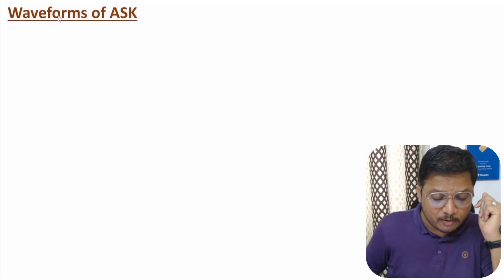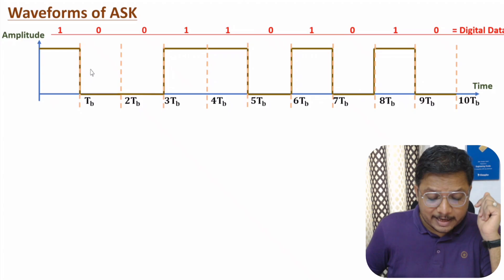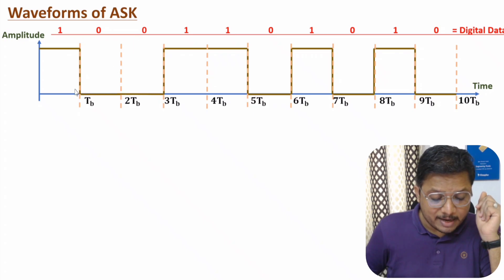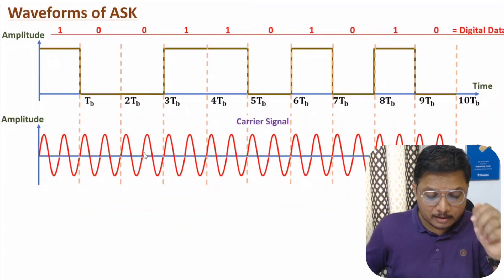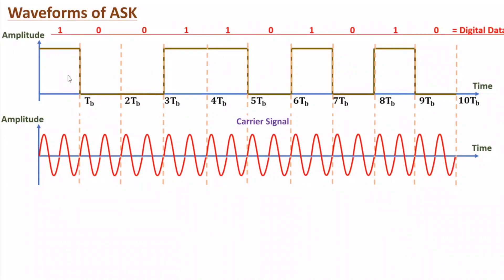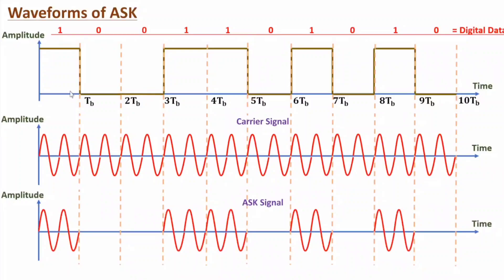Now I will explain the waveforms of ASK. The digital message signal has logic 1 at higher amplitude and logic 0 at zero amplitude, with bit duration Tb. The carrier signal is sinusoidal. The ASK signal is the multiplication of these two - binary ASK. At logic 1 we have the carrier signal, and at logic 0 we have zero amplitude. That is how one obtains the Amplitude Shift Keying output.